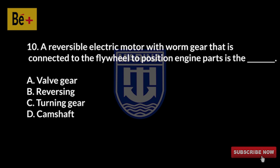A reversible electric motor with worm gear that is connected to the flywheel to position engine parts is the: A) valve gear, B) reversing gear, C) turning gear, D) camshaft. The answer is C, turning gear.